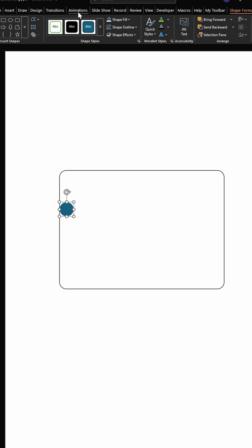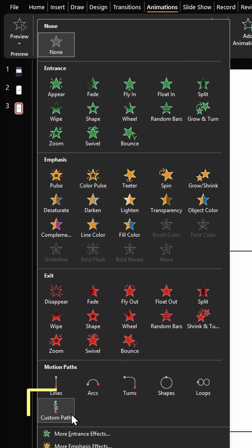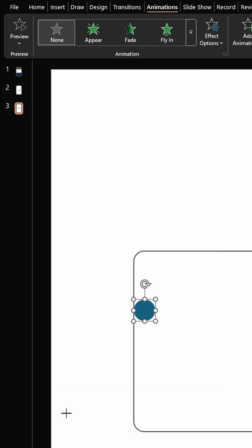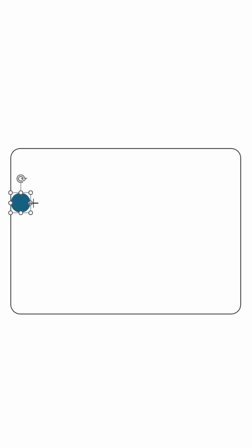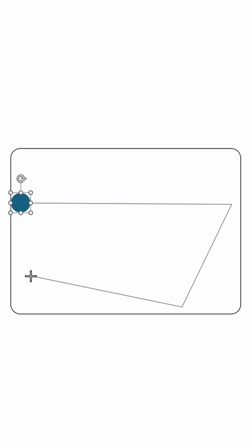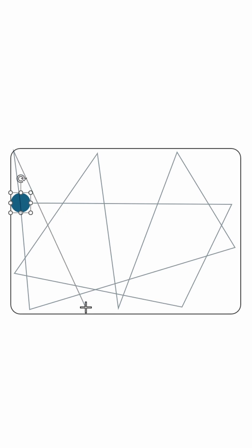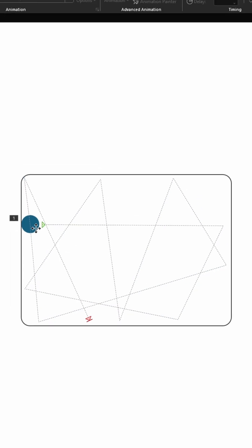Then click on Animations. Select Custom Path from Motion Paths. Let's draw a custom path. Then maybe it goes here, it bounces here again, and it keeps going. And let's end it here.